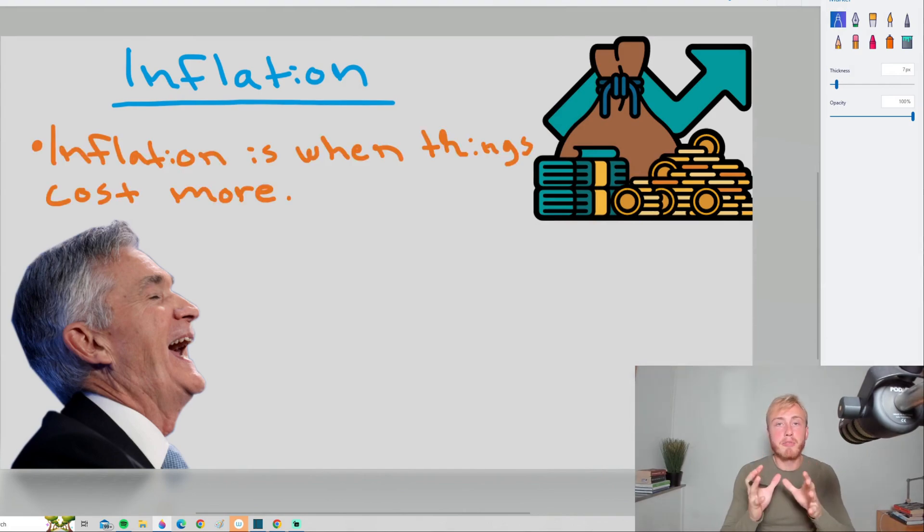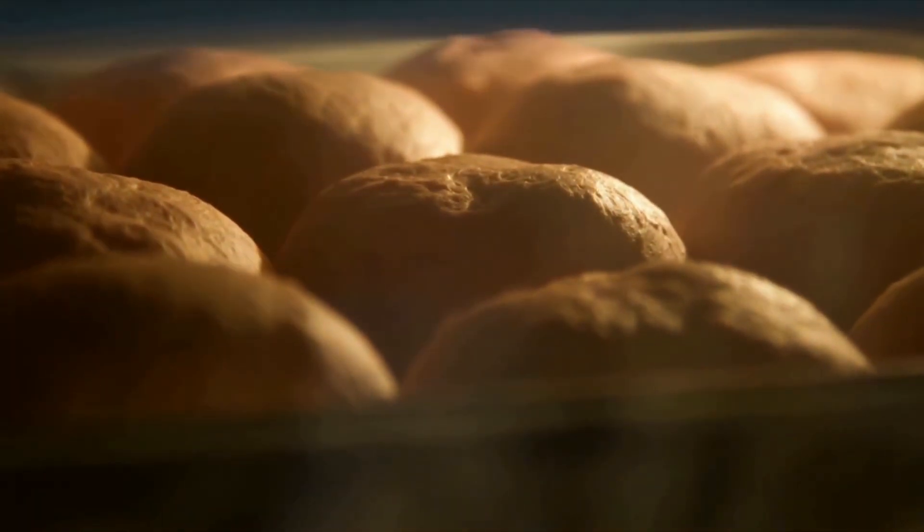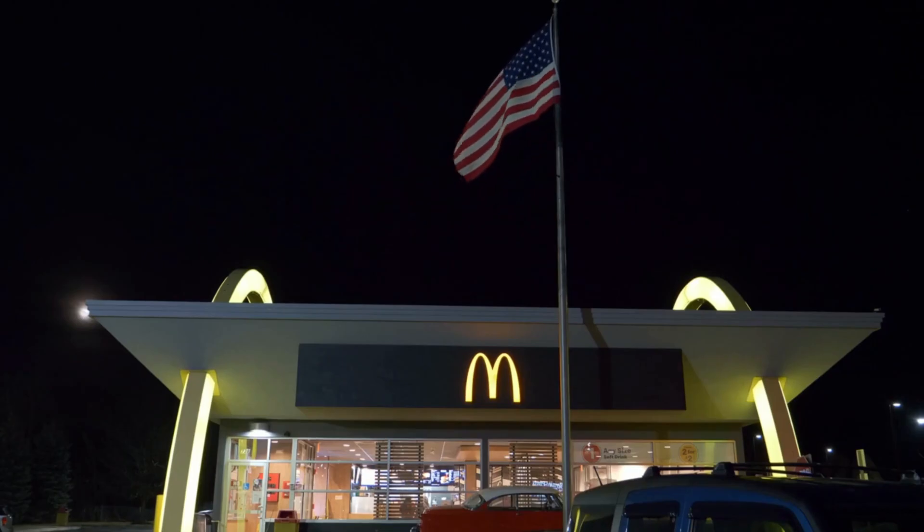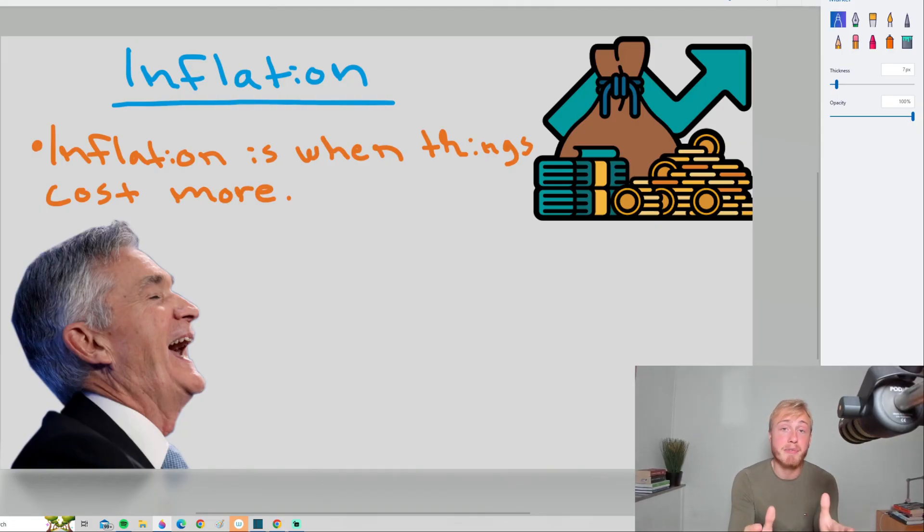So in the most simple terms, inflation is when things cost more. For example, if a piece of bread cost $1 ten years ago and now it costs $2, that is inflation. If a Big Mac cost $1 ten years ago and now costs $2, that is inflation. When things cost more or when prices rise, that is inflation.